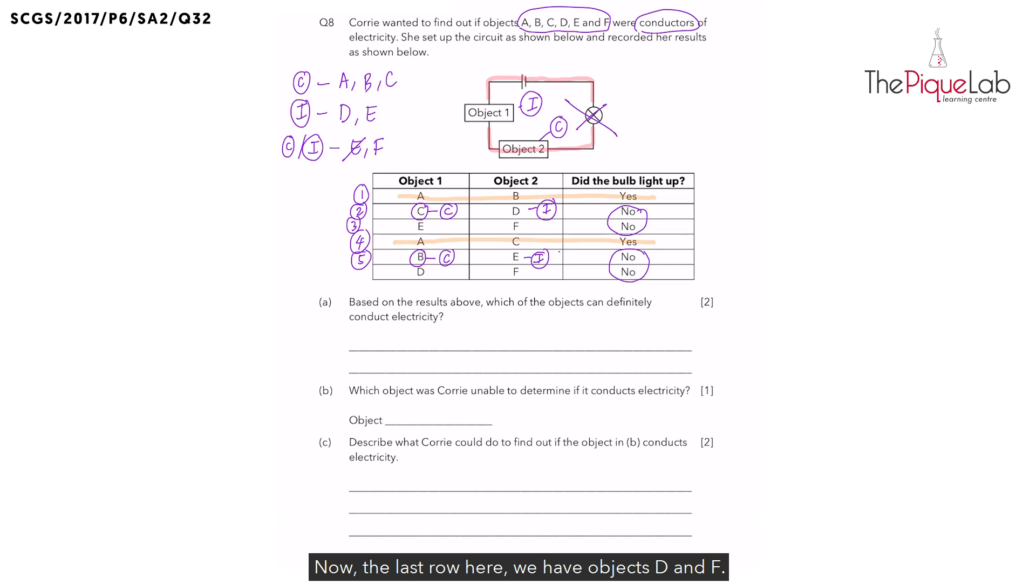Now the last row here. We have objects D and F. Now remember, from the second row, we know D is an electrical insulator. But what can we conclude about object F? Can F be an electrical conductor? Yes, the bulb will still not light up. Now what if object F is an electrical insulator? The bulb will still not light up. So we still cannot confirm if object F is a conductor or an insulator.